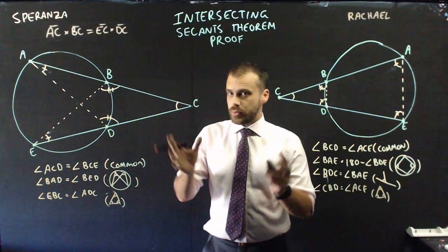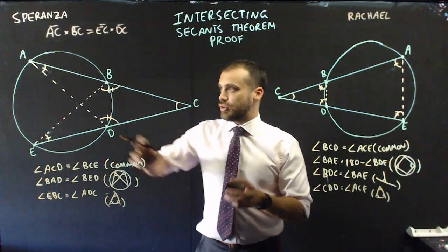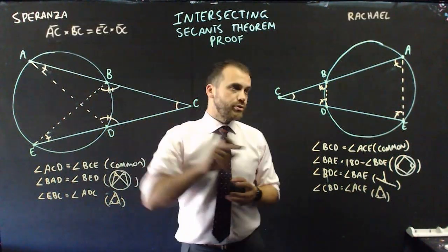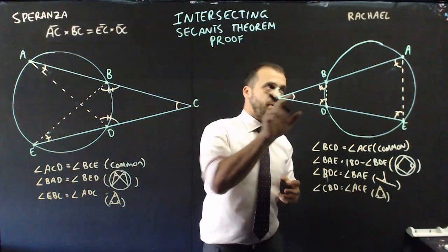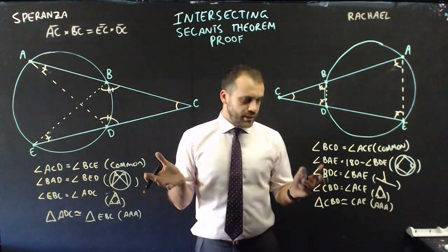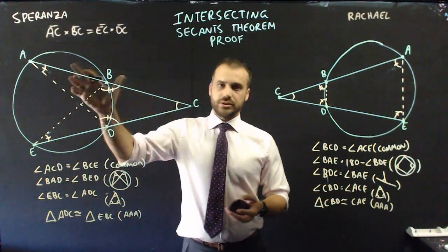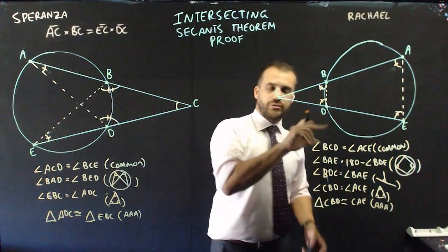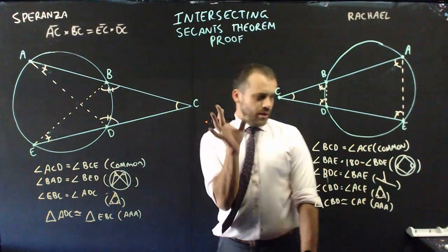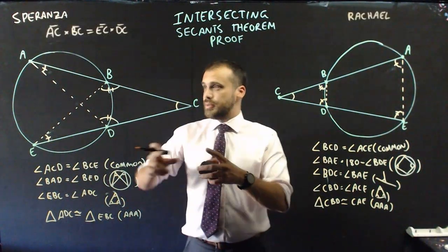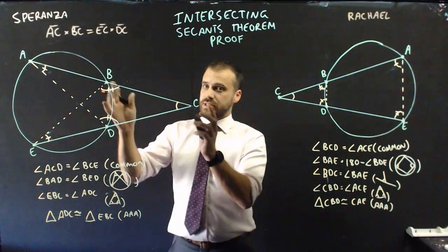Now, in both instances, what we have are similar triangles because of the angle, angle, angle rule. It's important to note that we both landed on similar triangle territory, but my similar triangles are different to Rachel's similar triangles. But the game we're playing is the same. We're going to use these ratios for these similar triangles.